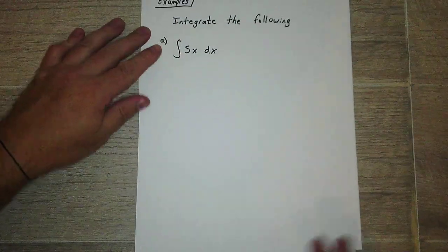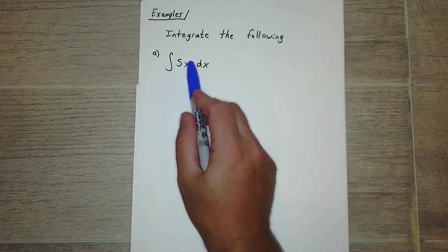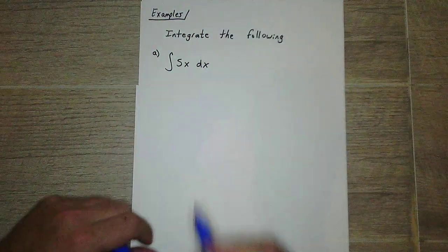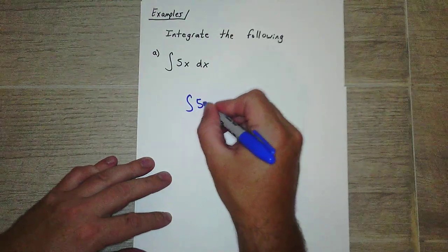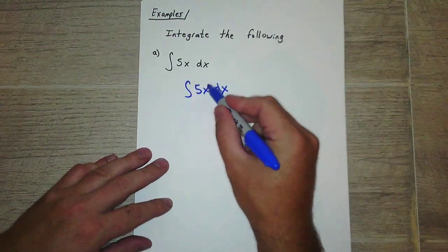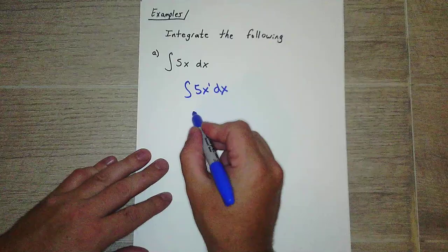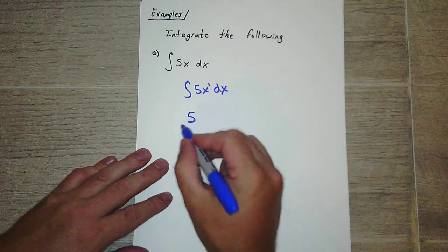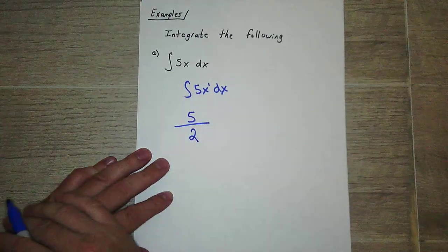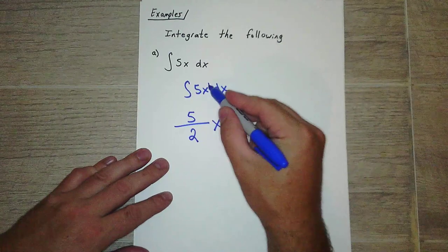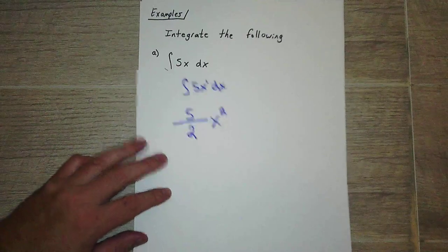So integrate the following. We have 5x. Integration of 5x with respect to x. So we can use that rule and you can just plug in the rule. The power here, I'm just going to rewrite it. So what's our exponent here? Our exponent here is 1. So it becomes, the 5 stays out front. We divide by whatever this is, we add 1. So 1 plus 1 is 2. And then we add 1 to the exponent. So that's pretty much it.